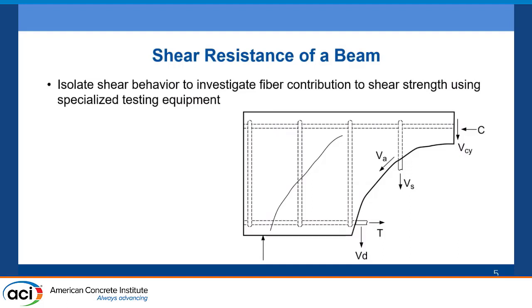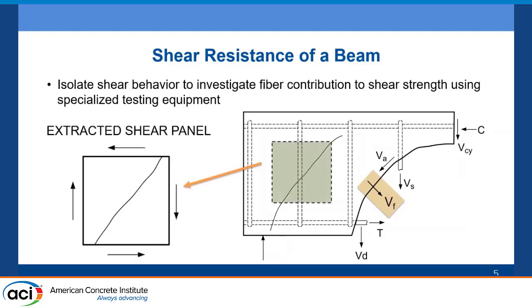We're going to look at just the shear resistance of the beams. Shear resistance is determined by a few different factors: the compression zone of the concrete, shear aggregate interlock, stirrups, and dowel action at the bottom. Beyond that, especially in fiber beams, we have fibers bridging the crack as well, which provide a little bit of shear resistance. Beams are one way of studying shear, but we wanted something more specific — extracting just the shear panel portion to study just that shear section.